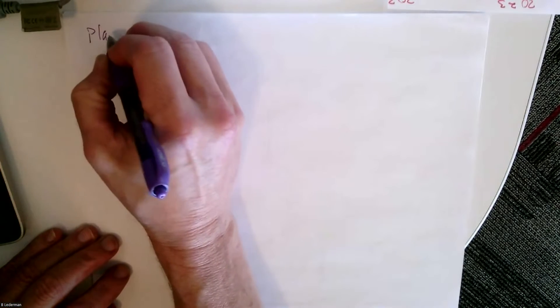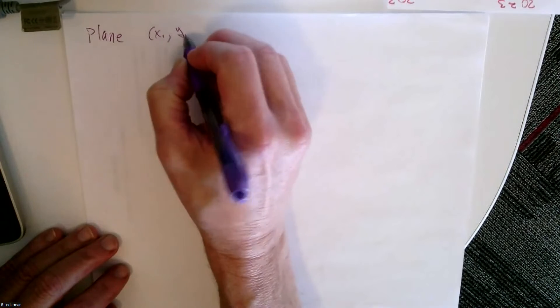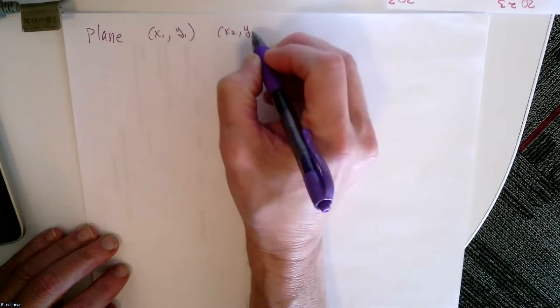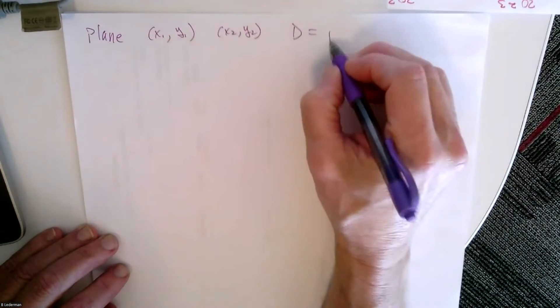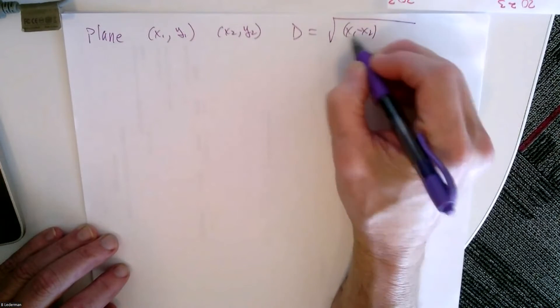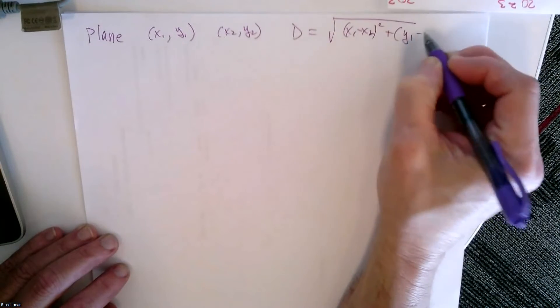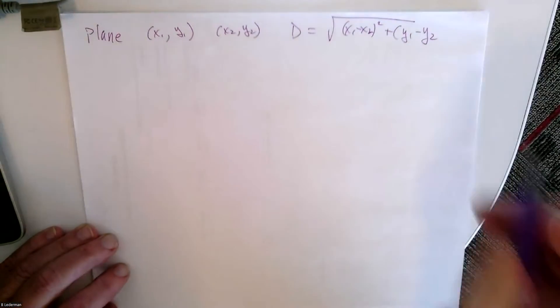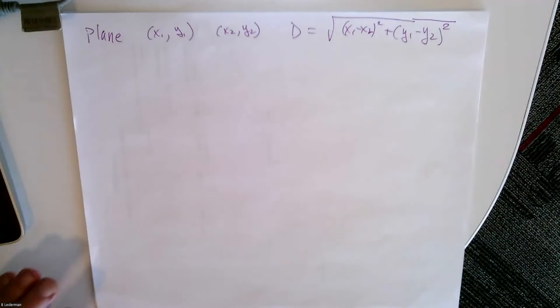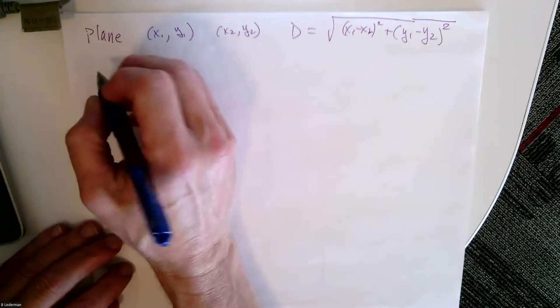Hey everybody, we're continuing with section 4.1, this is part two. We're going to go into some very cool and awesome material. We know in a plane, if you have x1 comma y1, that's a point, and you have x2 comma y2, the distance is equal to the square root of x1 minus x2 squared plus y1 minus y2 squared.